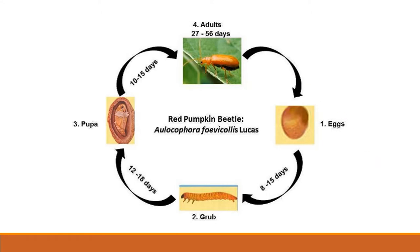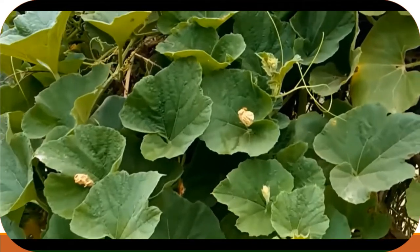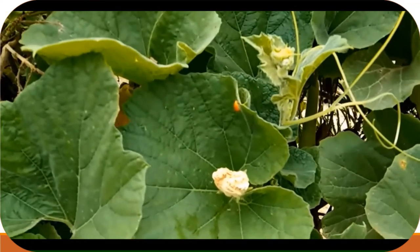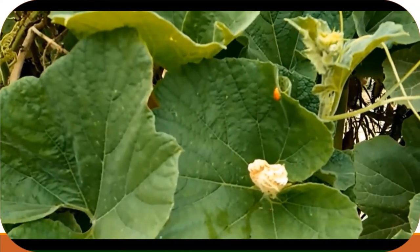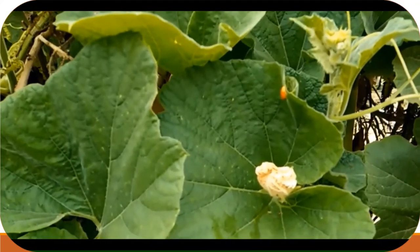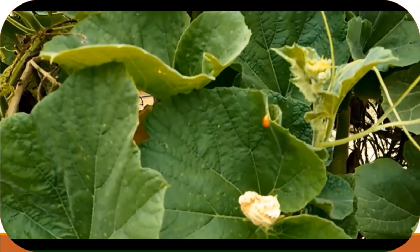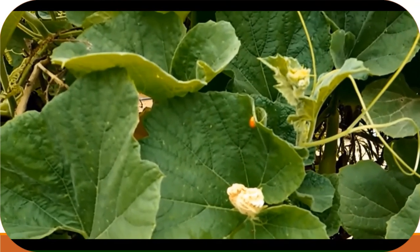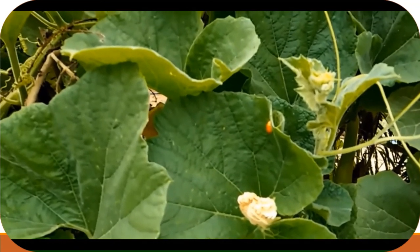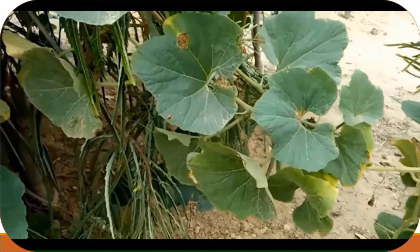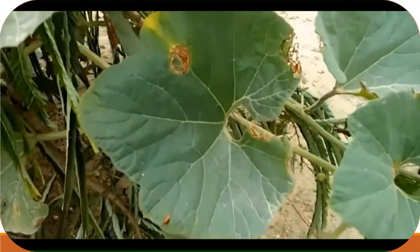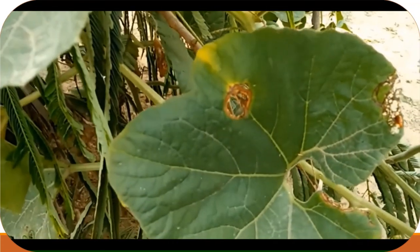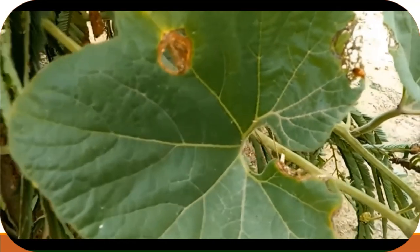In this video, you can see the adult beetle and the damaged leaves. These are the grubs — creamy yellow in color. When you dig out near the roots, you can find some of the grubs. These grubs feed on the roots and underground stem of the host plant, then pupate in the earthen chamber and emerge out as adults.